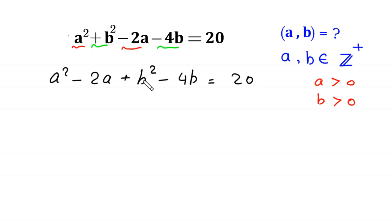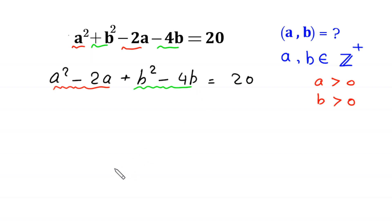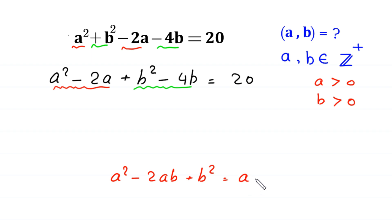Now we want to make a squared minus 2a a perfect square, and b squared minus 4b a perfect square, according to the algebraic identity: a squared minus 2ab plus b squared is equal to (a minus b) whole squared.